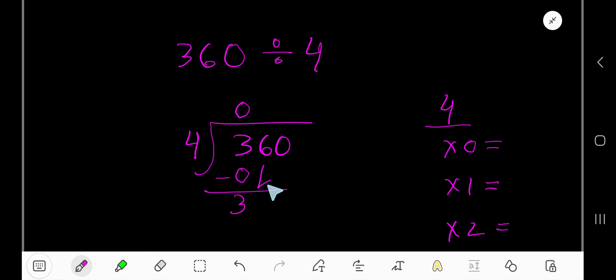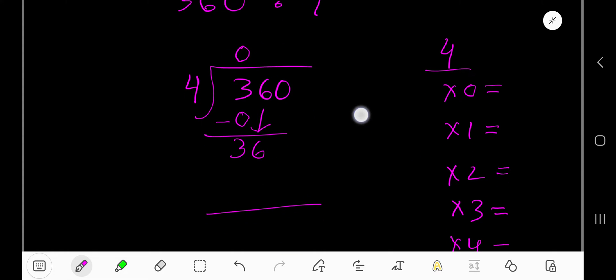Bring down this 6. 4 goes into 36 how many times? Let me find out the multiplication table of 4. Easy way: 4 times 0 is 0, then 4 times 1, just add 4 with the previous step, you get 4.